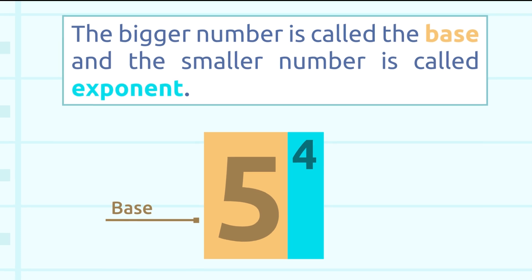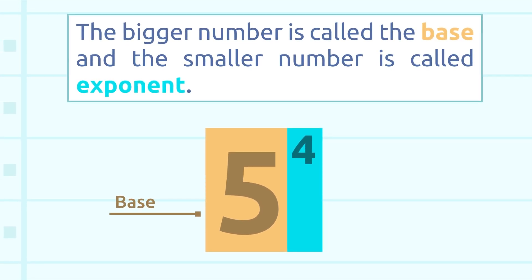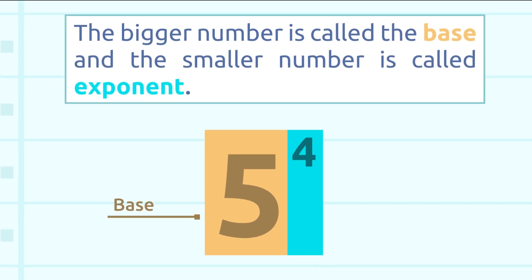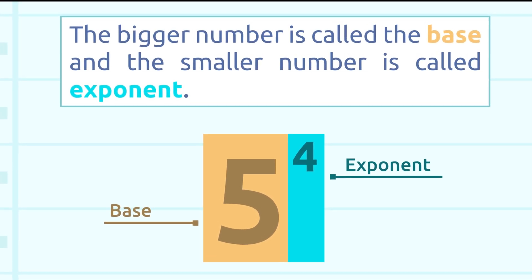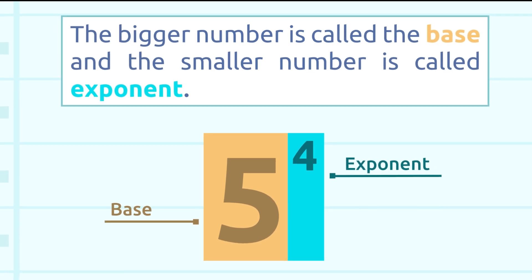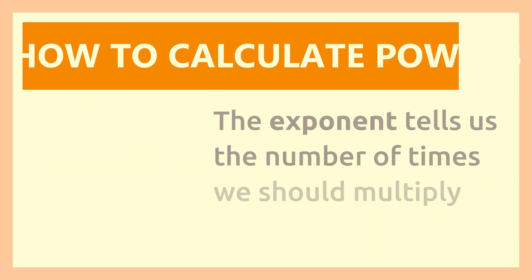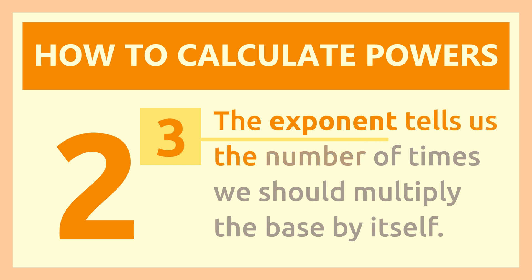The bigger number is called the base. Repeat after me: base. Great. The smaller number, this one right here, is called the exponent. Repeat after me: exponent. Way to go.